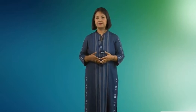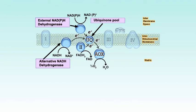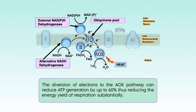AOX are homodimeric proteins oriented towards the inner mitochondrial matrix. AOX diverts electrons from the main respiratory chain at the ubiquinone pool and mediates the 4-electron reduction of oxygen to water. In comparison to electron transfer by the cytochrome chain via Complexes 3 and 4, AOX does not pump protons. Therefore, transfer of electrons by AOX does not create a transmembrane potential, and thus it is not coupled with ATP production. The decline in free energy between ubiquinol and oxygen is dissipated and mostly released as heat. The diversion of electrons to the AOX pathway can reduce ATP generation by up to 60%, thus reducing the energy yield of respiration substantially.